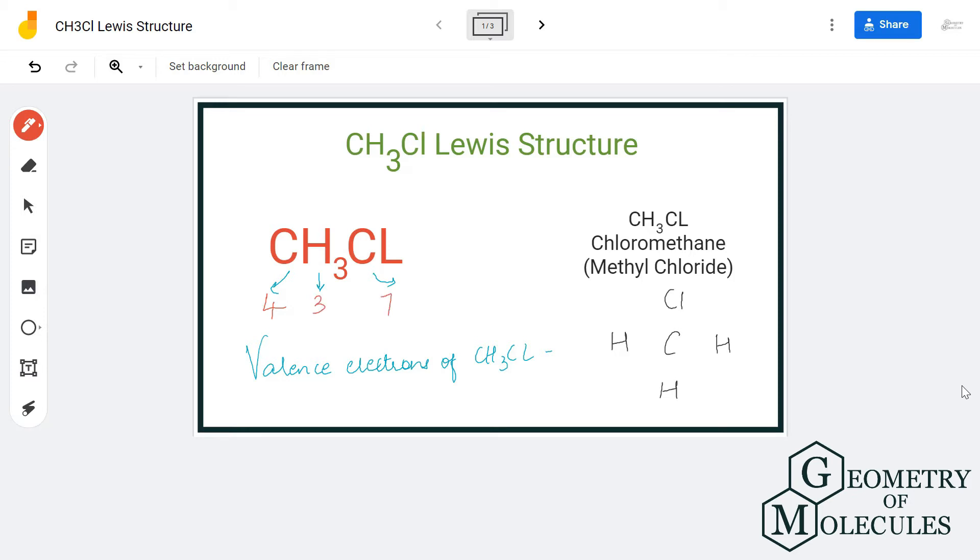Hence, there are a total of 14 valence electrons in CH3Cl. Now let's place all these atoms along with their valence electrons to see its bond formation and Lewis structure. Carbon atom will be in the center, all the hydrogen atoms will go on the outside.